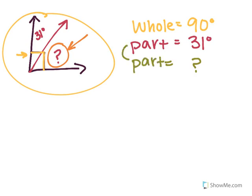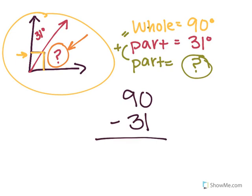If we put both of these parts together with addition, it would equal this whole. So how would we find this missing part? If we put both these parts together with addition to get the whole, how would we figure out what one of the missing parts was? Well, what's the opposite of addition? You're right, subtraction.